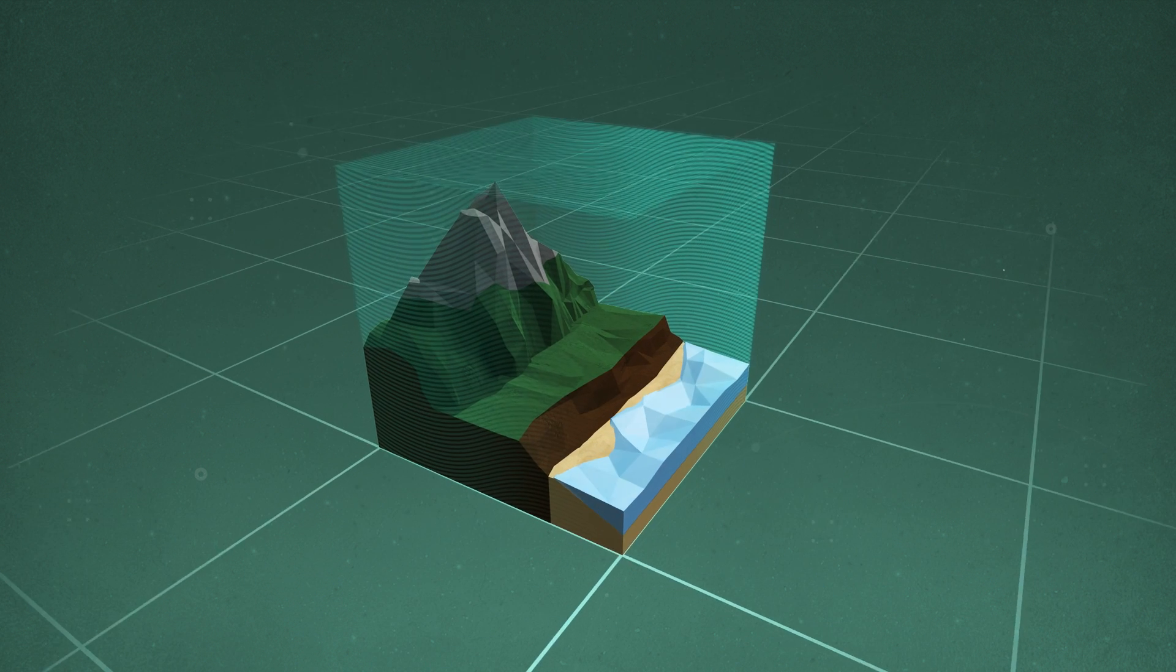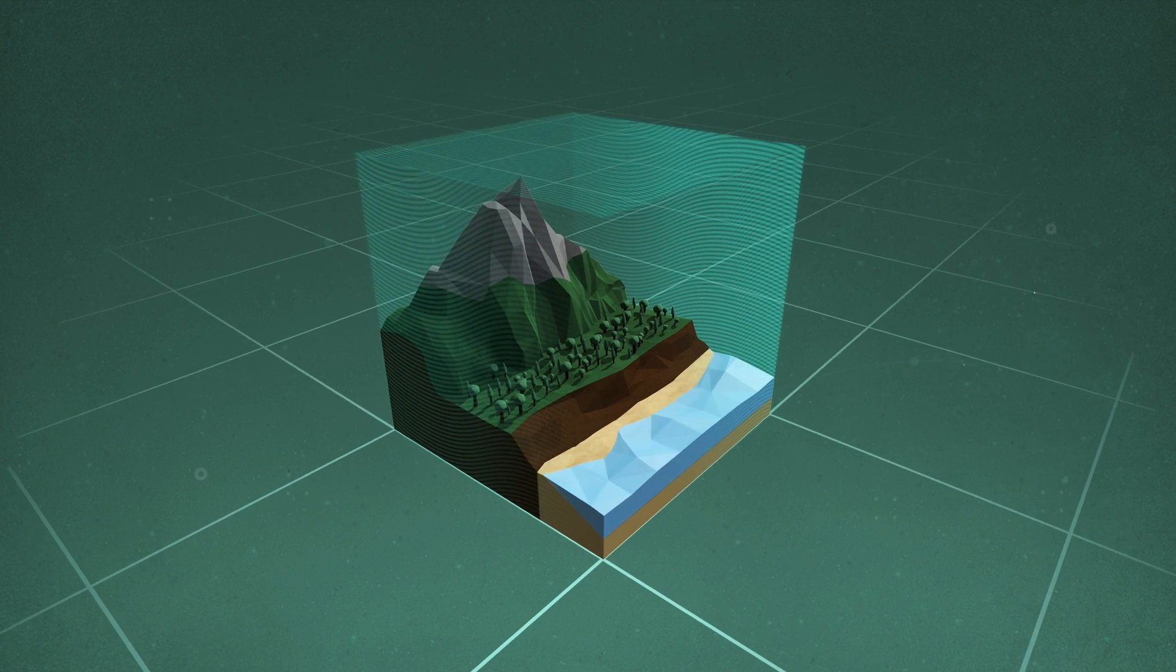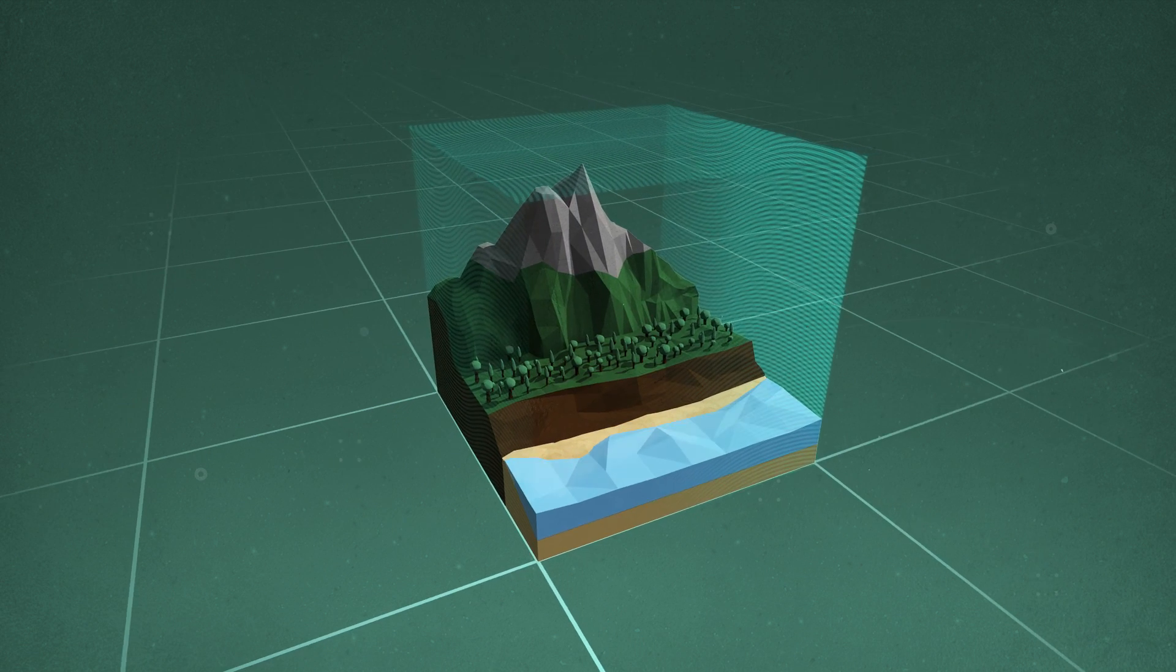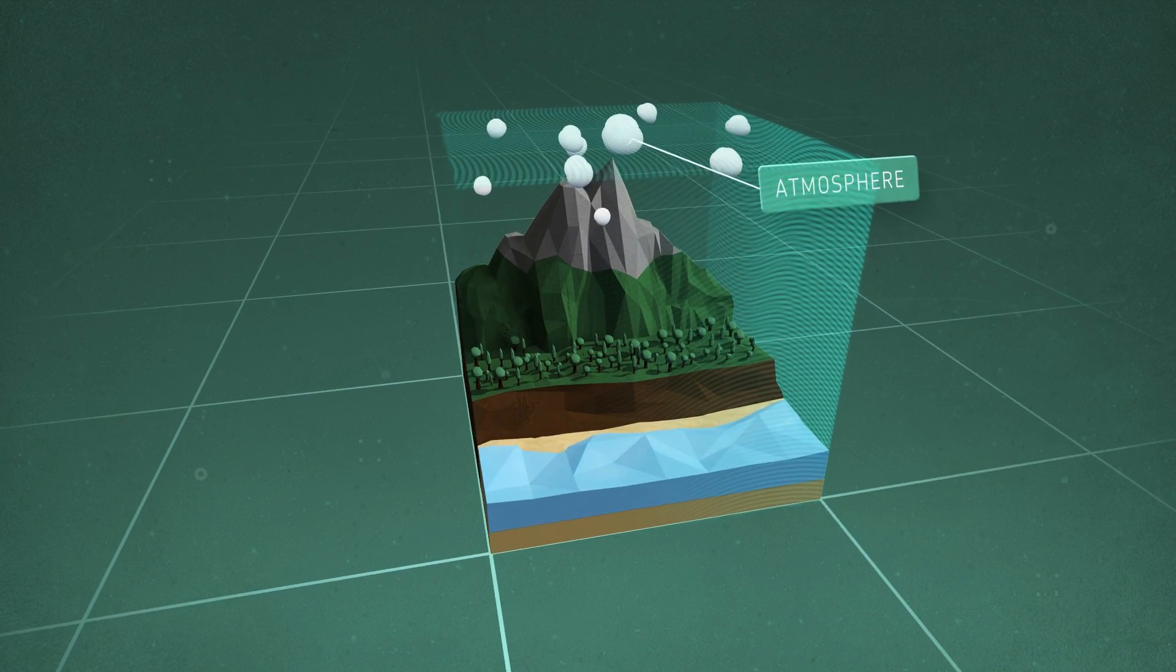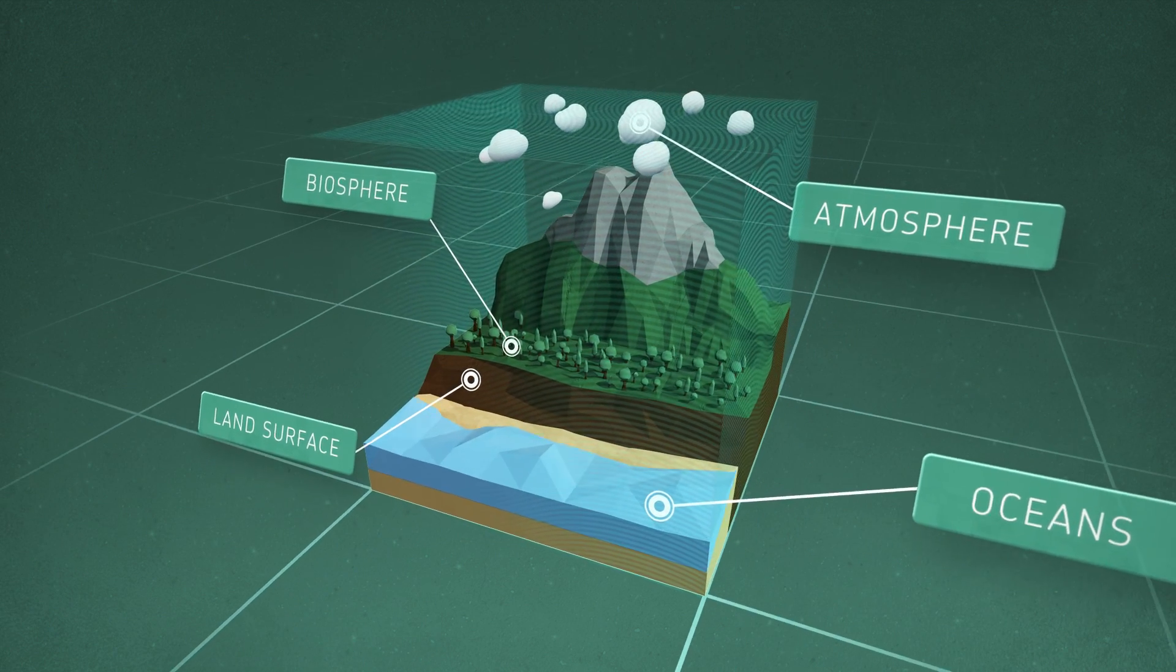We know how and why weather occurs. It varies over minutes, hours, and days. Climate is the average weather. We understand the physics and chemistry that describe the interactions between the atmosphere, the oceans, the land surface, and the biosphere that create weather and climate.